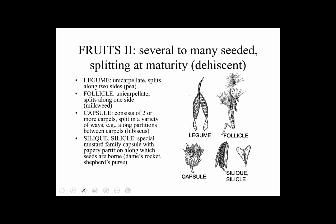The most basic and common dry fruit is called the capsule. The capsule consists of two or more carpels and splits in a variety of ways. It can split along lines or sutures, break open at little valves at the tip, or have pores around the top. It's a common fruit type found in a number of different families.